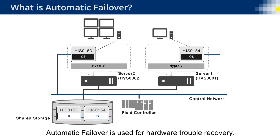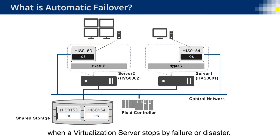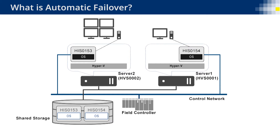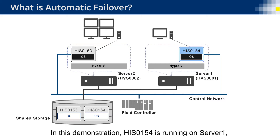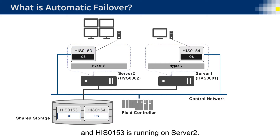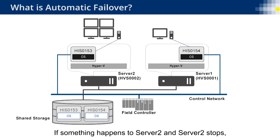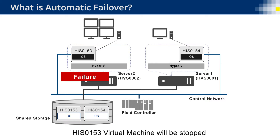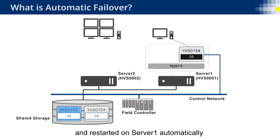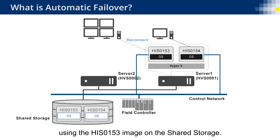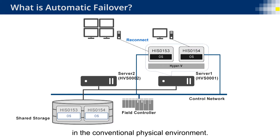Next is automatic failover. Automatic failover is used for hardware trouble recovery. It restarts a virtual machine automatically in another virtualization server when a virtualization server stops by failure or disaster. In this demonstration, HIS-0154 is running on Server 1 and HIS-0153 is running on Server 2. HIS-0153 and HIS-0154 virtual machine images are stored in the shared storage. If something happens to Server 2 and Server 2 stops, HIS-0153 virtual machine will be stopped and restarted on Server 1 automatically using the HIS-0153 image on the shared storage. Automatic failover takes about several minutes, whereas it takes about one day to recover from hardware failure in the conventional physical environment. Automatic failover reduces the system downtime in case of a failure or disaster.